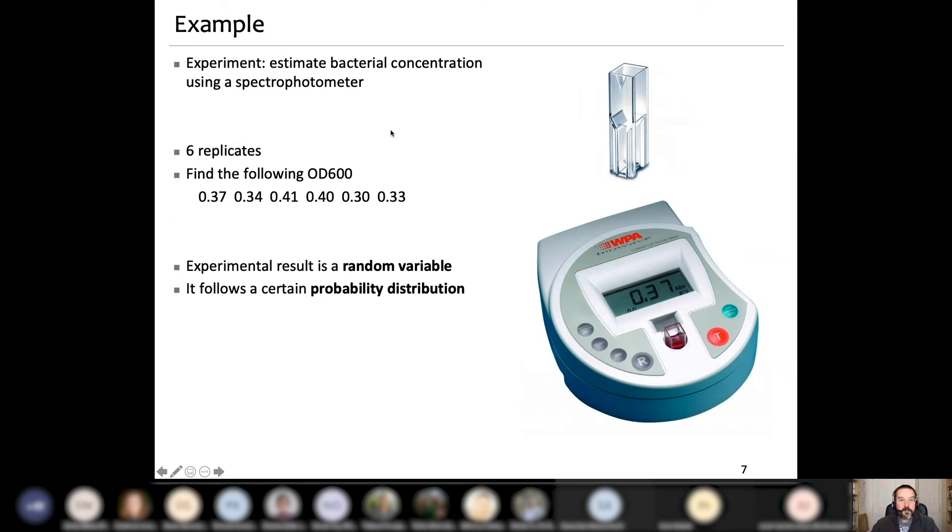Consider this very simple example. You estimate bacterial concentration using a spectrophotometer. You put your sample here in this vial. You place it in the instrument. And this instrument measures OD600, which is the optical density at 600 nanometers, which is proportional to the concentration of bacteria in this sample. And now you do this experiment in six replicas. That means you take a sample, an aliquot from your culture, you put it in a vial and you measure it and you do it again, again and again. And every time you repeat your experiment, you get a slightly different value.